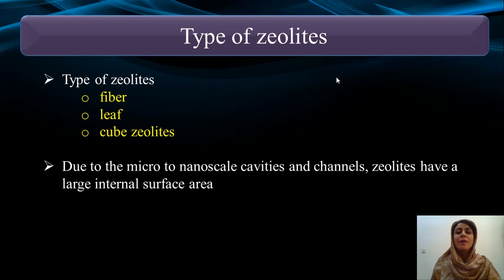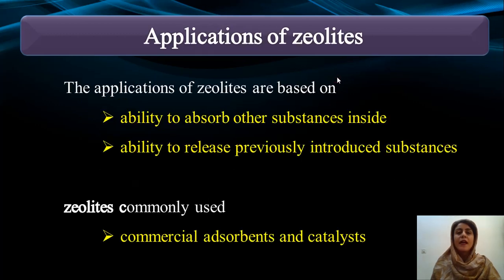Types of zeolites. There are three different types of zeolites, including fiber, leaf, and cube zeolites. Due to the micro- to nanoscale cavities and channels, zeolites have a large internal surface area.